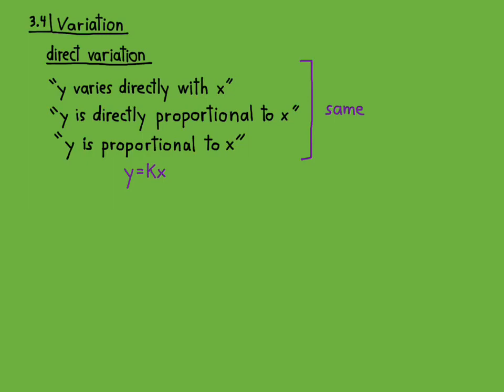Okay, what does it mean? It means that Y is some constant times X. The constant K here is called the constant of proportionality.